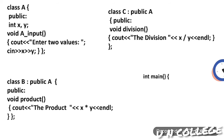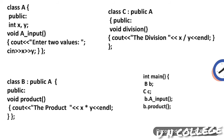In the main method, object b is of class B and object cc is of class C. Calling b.A_input invokes class A's input method using the object reference of class B, since class B is derived from class A. Then b.product — if we inputted 2 and 3, we get output 6 from class B's product method. Then cc.A_input is called, which is the method of class A accessible through class C, and suppose we enter 10 and 2.